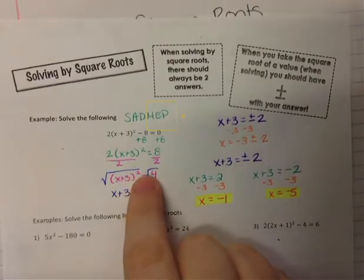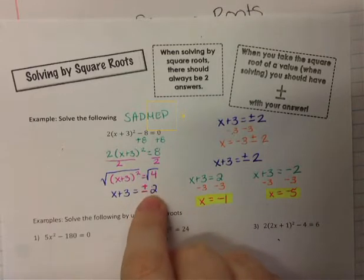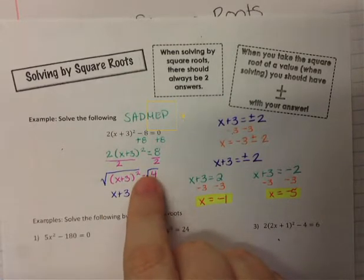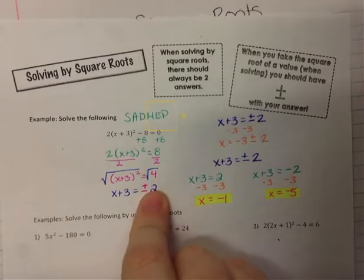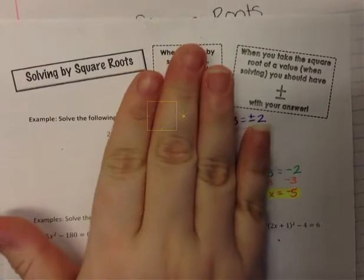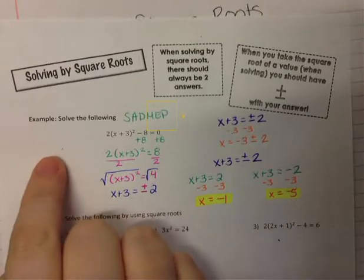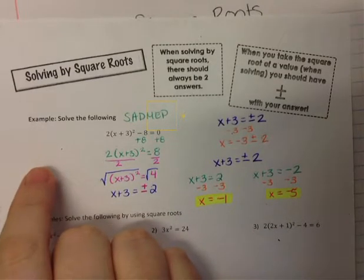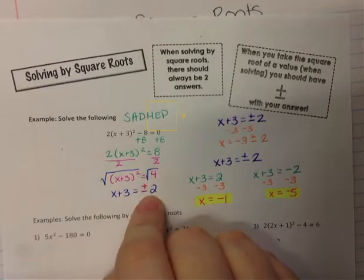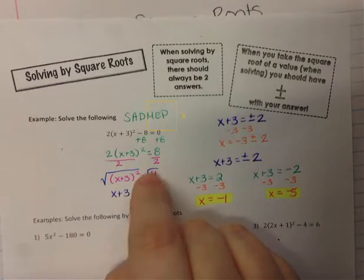When I took the square root from this side to here, I had to put the plus or minus on my value, not the expression, but my value. So that's why the square root of four is plus or minus two. If I just said 'what is the square root of four,' it would just be positive two. But because I want to know what squared gives me four, I have to have positive two squared gives me four, and negative two squared gives me four as well.